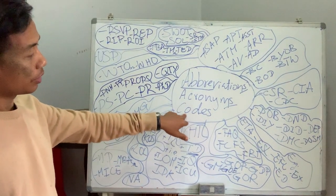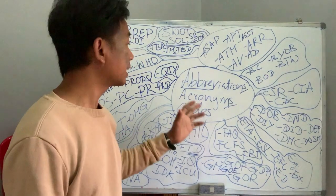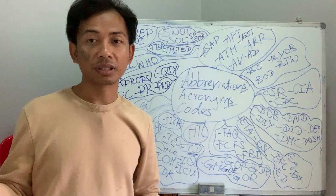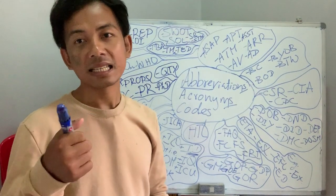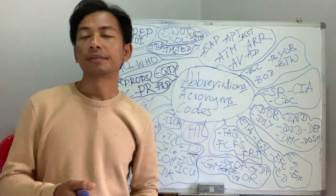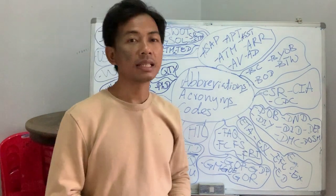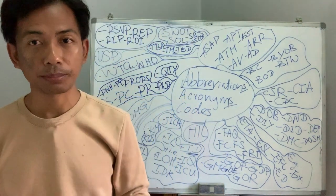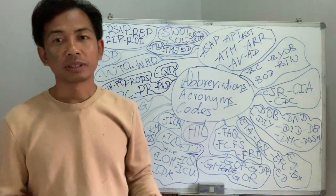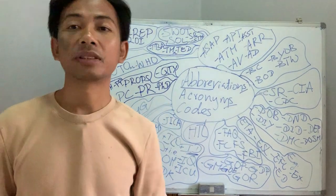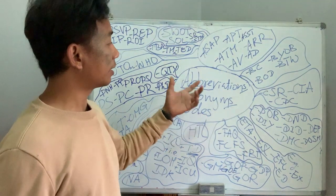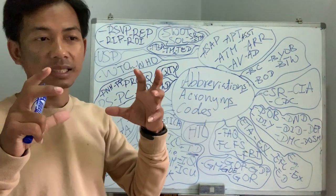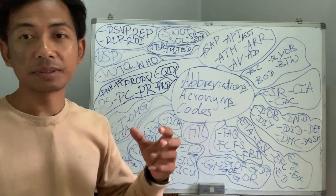How about code? Code is not really common, but in hospitality we use it a lot, especially for destinations or areas. For example, Siem Reap Airport — we call it REP, R-E-P. Phnom Penh Airport — we call it PNH, P-N-H. That is Phnom Penh International Airport. Also for Siem Reap, sometimes we call it SR, and Phnom Penh we call it PP. So this is more about code — not really abbreviation, because it is just a way to represent a destination.